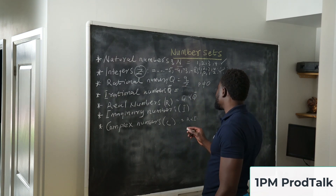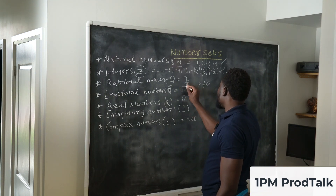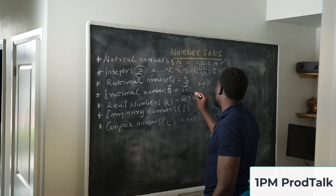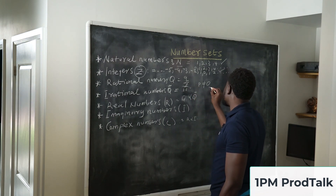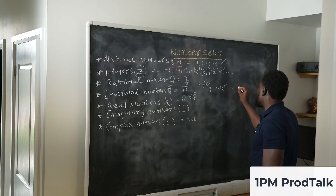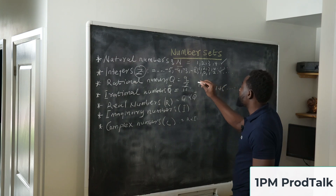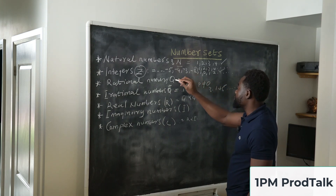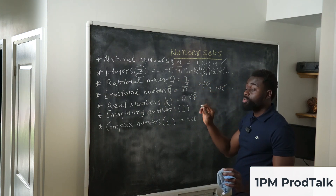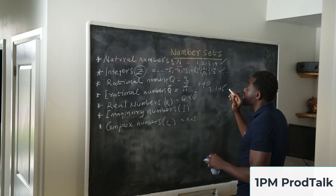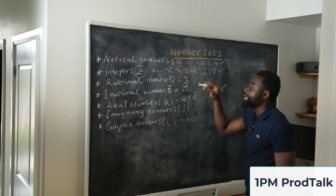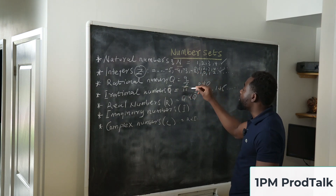The next thing is irrational numbers. An example of an irrational number would be pi. The value of pi is 3.145 and so on, and this cannot be written in the form of a quotient or a fraction. So those are irrational numbers — anything opposite of a rational number.